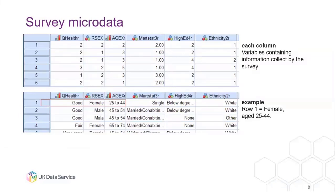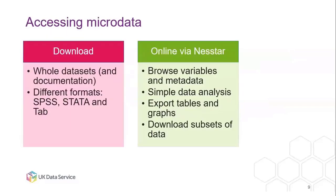We get survey microdata from survey data. Microdata looks like this: the data are displayed in rows and columns, where each row represents the information from a single person and each column represents the actual information. For example, the first column is Q Health R — whether a person has good health — then sex, age group, and so on. You can see, for example, that the first person says they have good health, they are female, and they are aged 25 to 44.